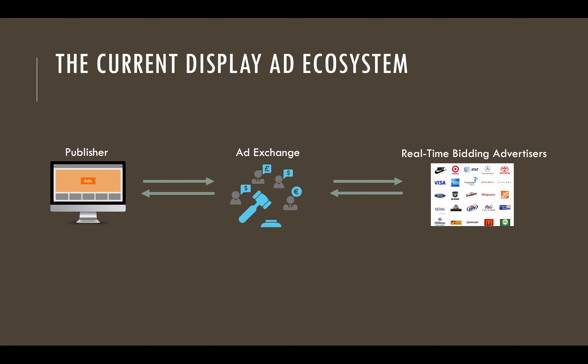In real time, a publisher sets a reserve price for an ad impression as the minimum accepted price and then auctions the impression through an ad exchange. The winning advertiser who bids the highest is charged and can show the ad on the publisher's web page.